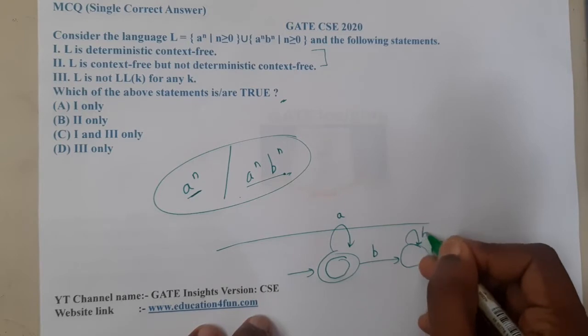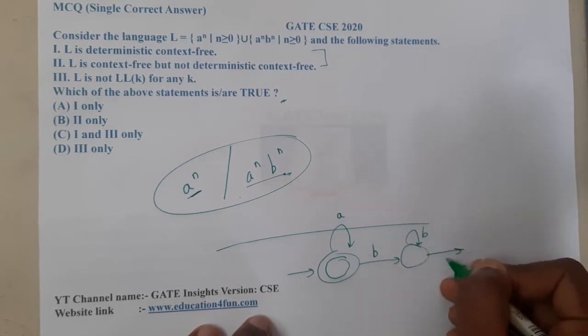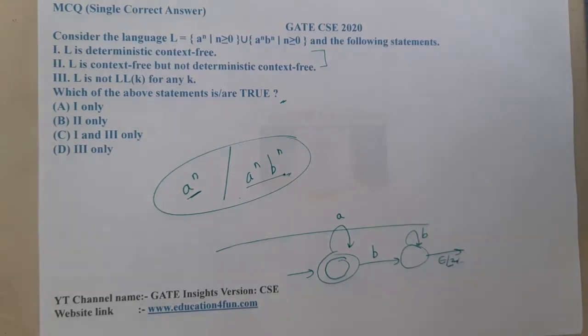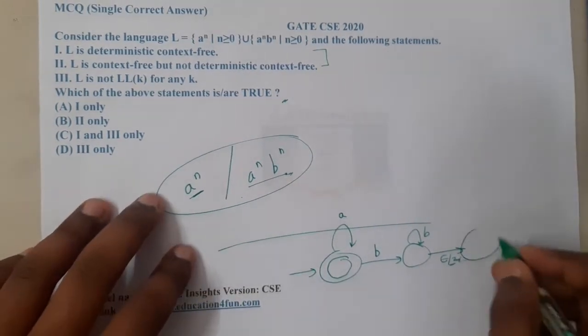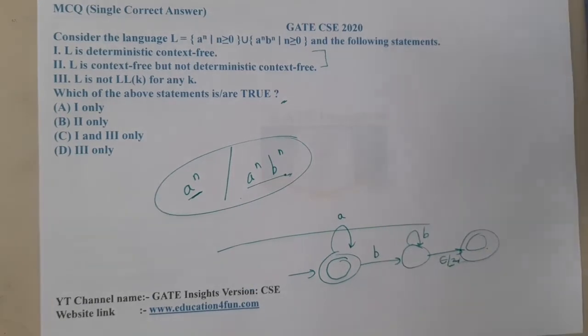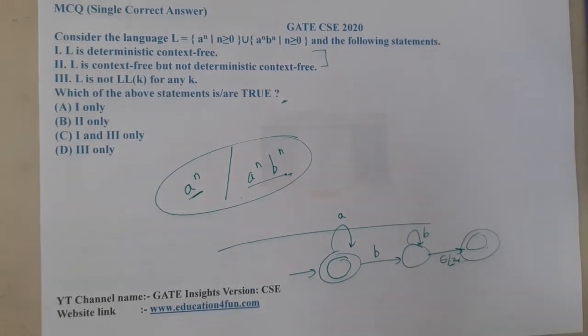As I get b's, I will pop them. As I get at the end, if I get epsilon and my stack top is Z0 and if the input is epsilon, then I will accept it. I did not write exactly the diagram guys, but it is possible, right? To be clear, yes.